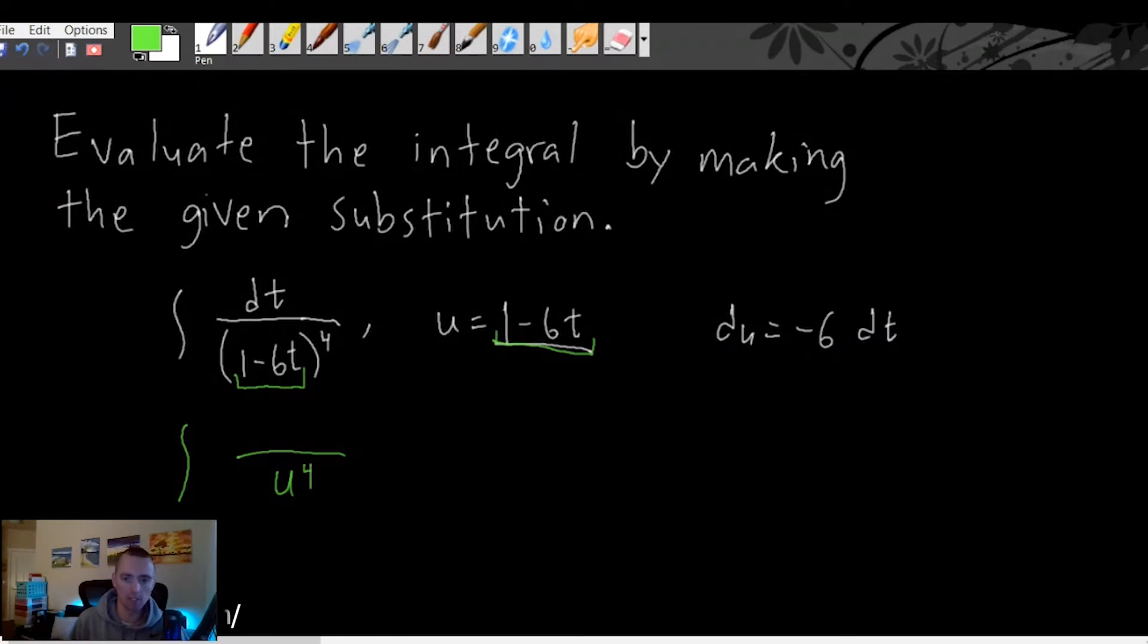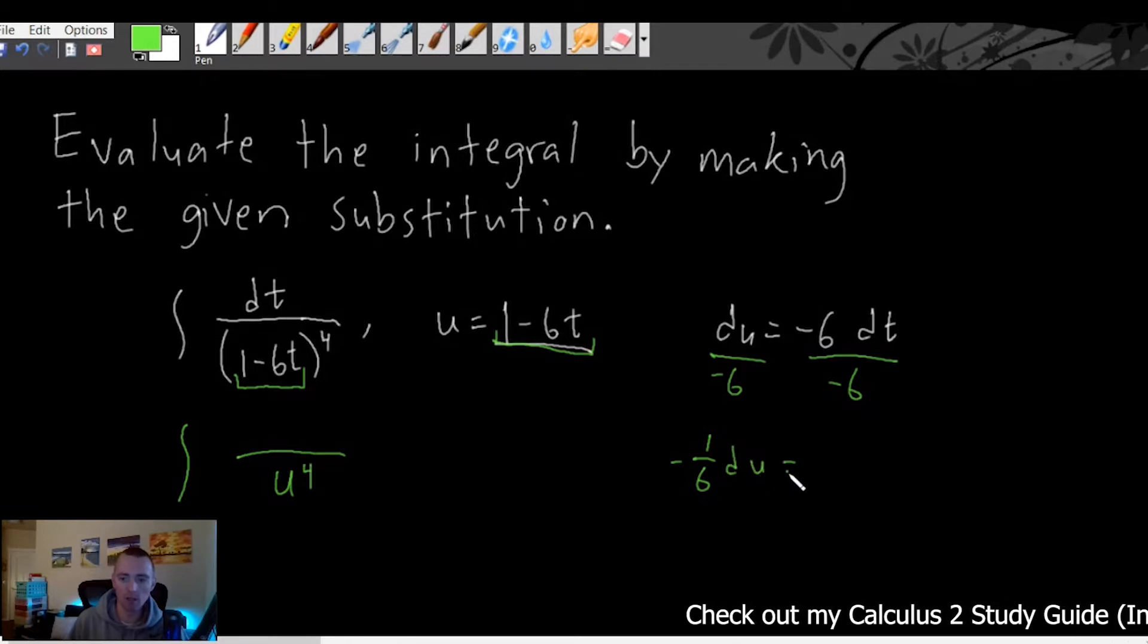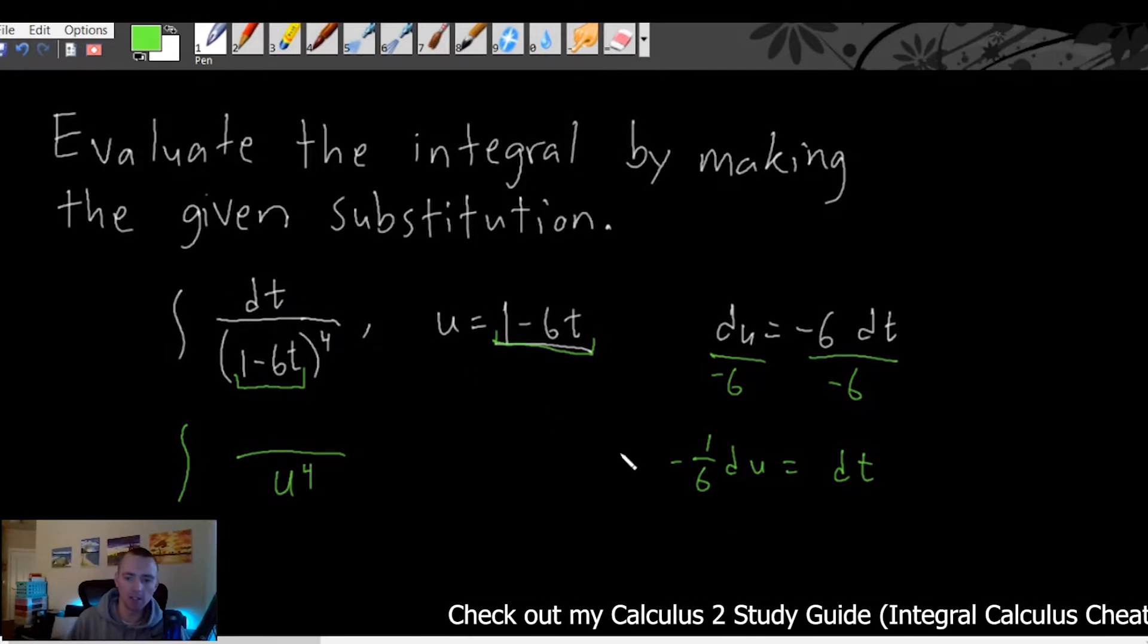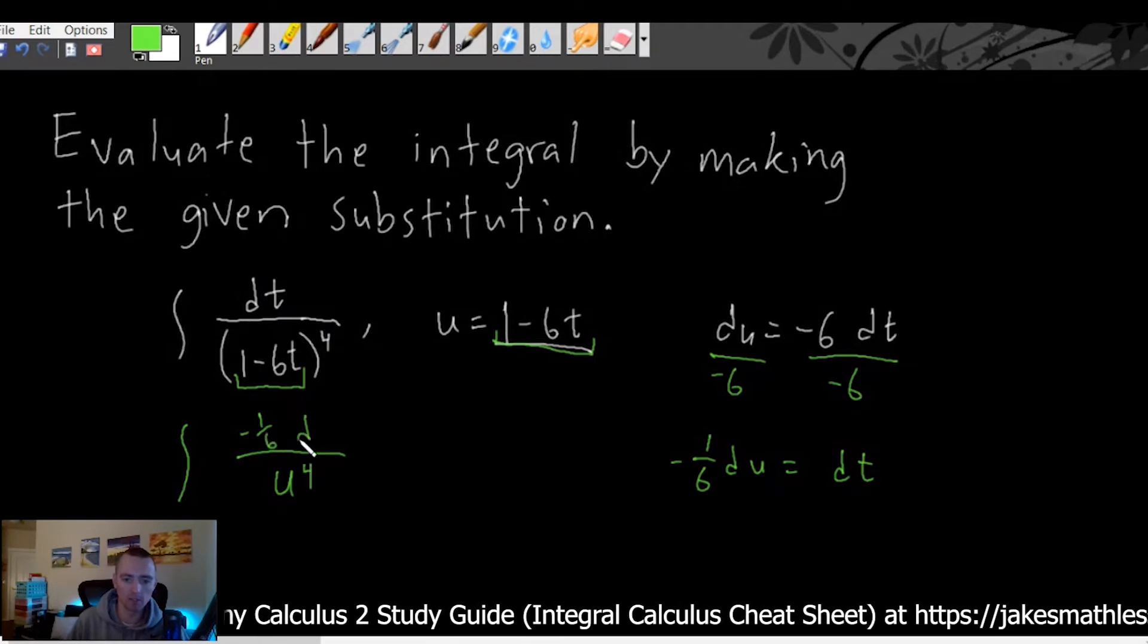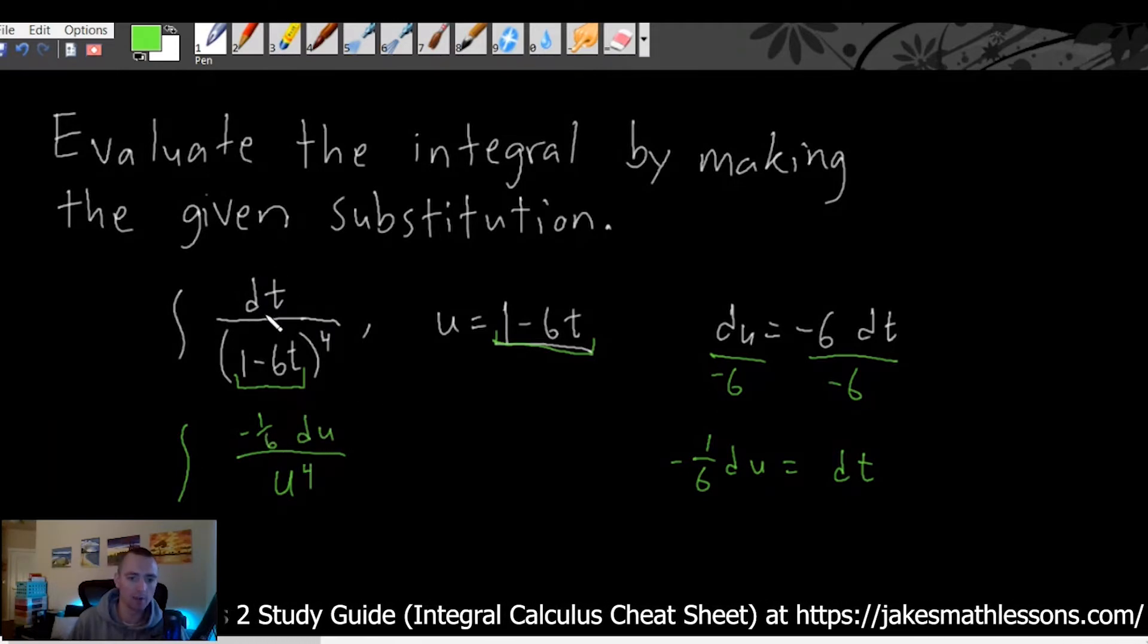Well to do that, we figured out this equation over here that involves dt. All we really have to do now is take this equation and solve it for dt. Well to do that we can just divide both sides of this by negative six and we get basically one over negative one six times du equals dt. So dt is the same as negative one six du. So we could basically think of doing negative one six times du replacing our dt here.